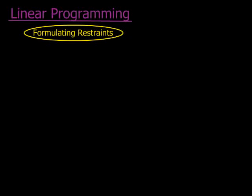Welcome to another lesson on linear programming. Today we're going to look at formulating restraints. Linear programming is when I am producing two products usually, and I want to get the optimal result in producing these two products — how many of the one must I make, and how many of the other one must I make? I'm going to call the one X and the other one Y.